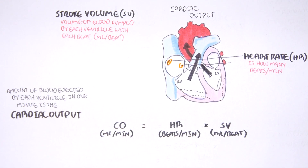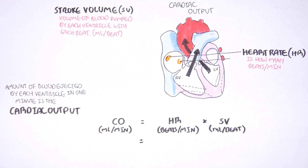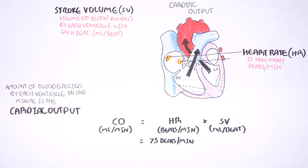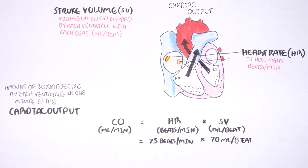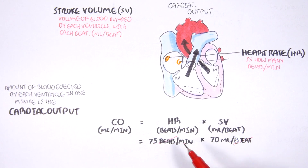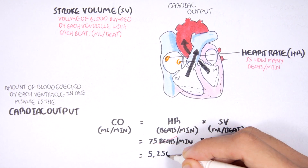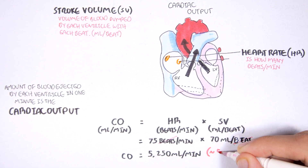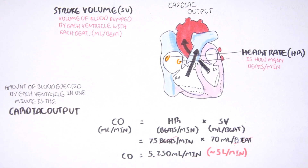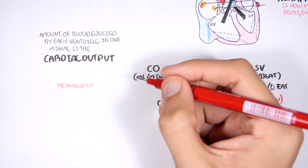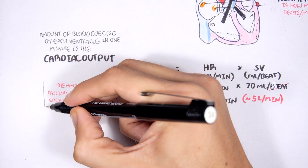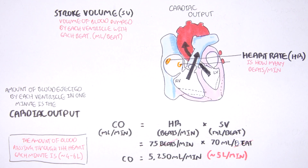Let's look at an example of calculating cardiac output. The average heart rate is about 75 beats per minute, and the stroke volume is about 70 milliliters per beat. Canceling the beats out, we get a cardiac output of 5,250 milliliters per minute, which is about 5 liters per minute. This is classified as normal — the amount of blood passing through the heart each minute is about 4 to 6 liters, quite amazing for an organ the size of our fists.